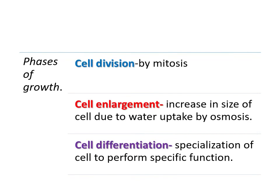In cell division, which is the first phase of growth, the cell divides and increases in number by the process of mitosis. We will see later in detail how cells divide by mitosis, resulting in an increase in the number of cells in the body. After the cells have divided, they are not yet mature or full-sized. They are going to enlarge — this is the second phase of growth, cell enlargement. In cell enlargement, there is an increase in the size of a cell. Normally, a cell increases in size when it takes water by osmosis, causing the cell to expand and increase in size.